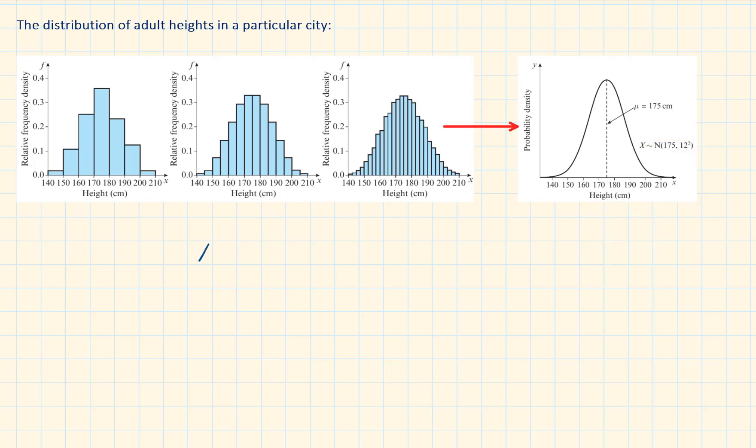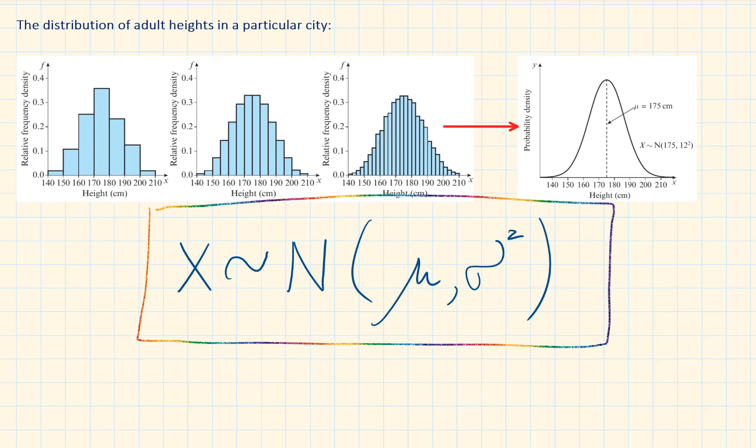We can model these heights using a normal distribution with mean of 175 cm and standard deviation of 12 cm. If x is a normally distributed random variable, we write this as x is normally distributed with mean mu and variance sigma squared, where mu is the population mean and sigma squared is the population variance, or standard deviation squared.